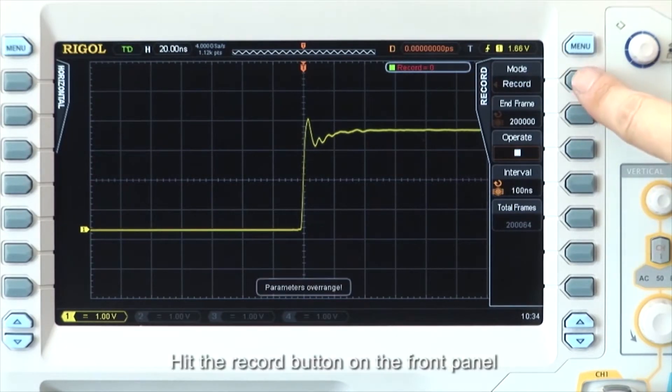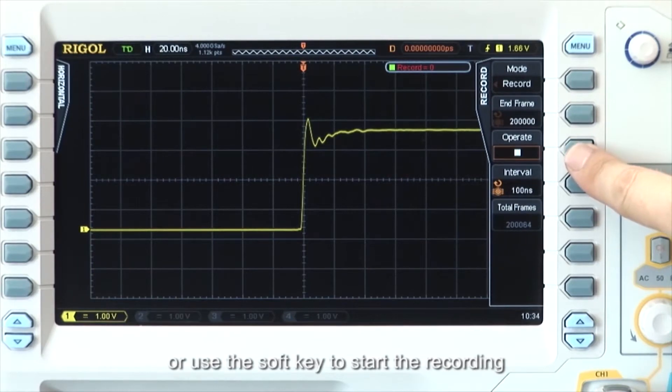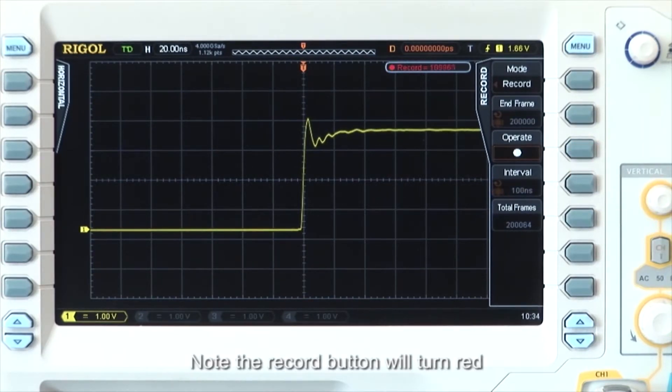Hit the record button on the front panel or use the soft key to start the recording. Note the record button will turn red and start to blink when recording is active.